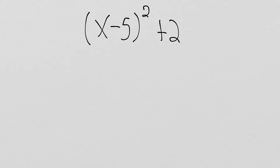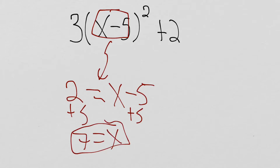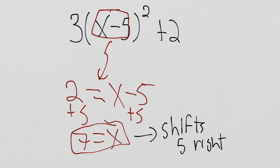We reviewed the idea of transforming functions. We have the x squared graph, but we could take x squared and subtract 5 inside, add 2 outside, and multiply out front by 3. The x minus 5 is replacing our input — so if we had an input of 2, and we replace it with x minus 5, doing some algebra gives us x equals 7. So the input 2 has moved to an input of 7. We've shifted 5 to the right in the x direction.